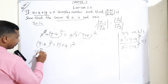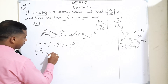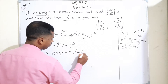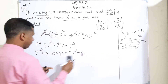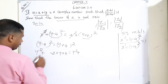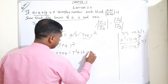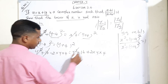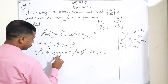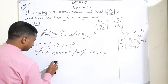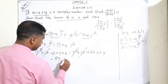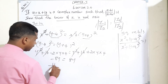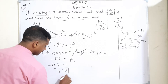Expanding: y squared plus 16 minus 8y is equal to y squared plus 16 plus 8y. Here y squared cancels and positive 16 cancels on both sides. So minus 8y equals positive 8y, giving minus 16y equals 0. Therefore, y is equal to 0.